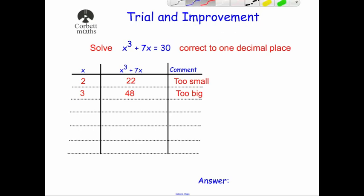So what we're going to do is carry on this table. We want to get our answer to one decimal place, so our answer is going to be in between two and three — it could be 2.1, 2.2, 2.3, 2.4, and so on. We need to find which one it will be. We've tried two, we've tried three, we're looking for 30. That's somewhere in between 22 and 48, so let's try 2.5. That's the first value we're going to try on our table.